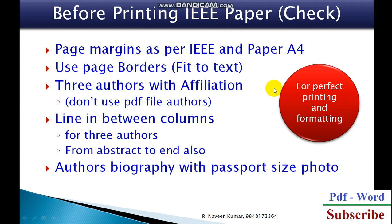Use three authors with their affiliation — affiliation means the address of the author. Don't use the PDF file's author names; write the three authors' names with their affiliations according to your roll numbers. In some cases, the Department of Electrical Engineering may not fit in a single line, so abbreviate it as DEPT. and ENGG. so it fits on one line. You also have to use a line between columns — for three authors and for two columns, use a line between them from the formatting to the end of the paper. Also include the author biography with photograph.